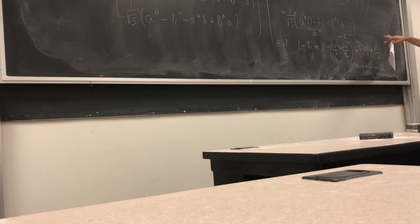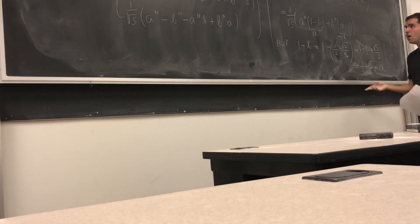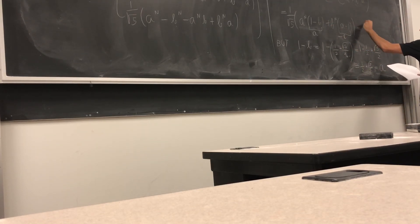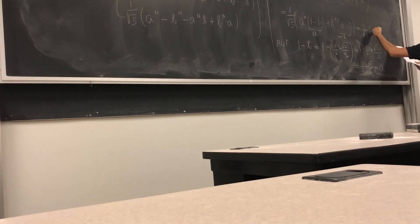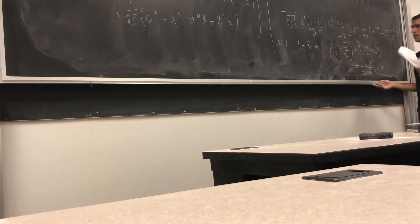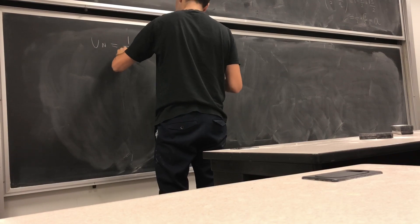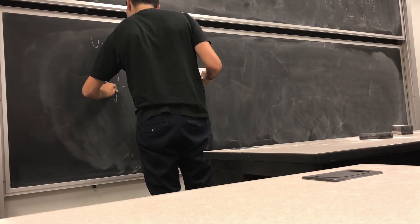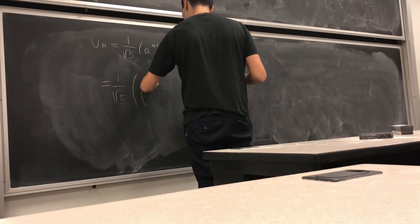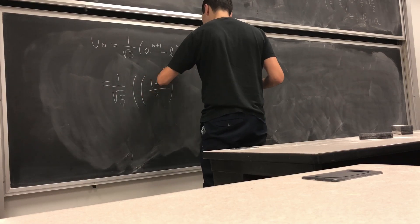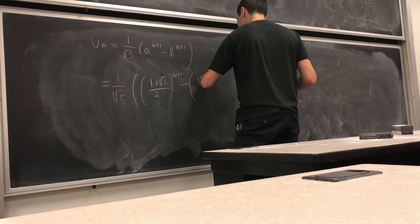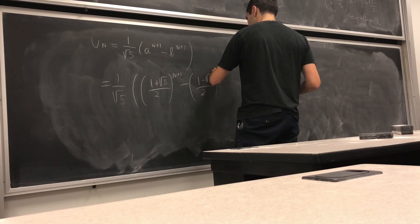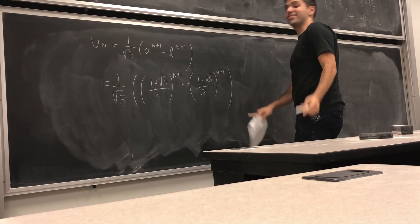The formula that looks very ugly is in fact not that ugly at all. Substituting, u_n = (1/√5)(α^n · α + β^n · (−β)) = (1/√5)(α^{n+1} − β^{n+1}). So to conclude, u_n = (1/√5) · [(1 + √5)/2]^{n+1} − [(1 − √5)/2]^{n+1}, which is our final formula.